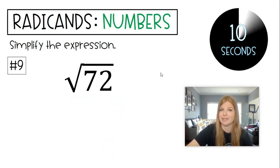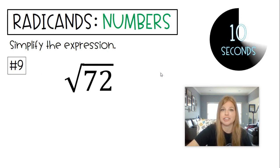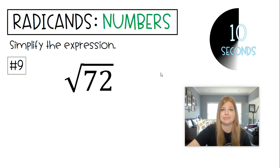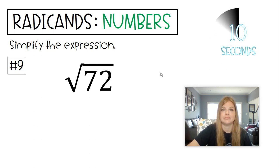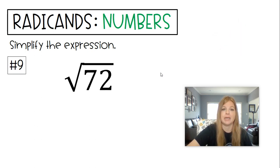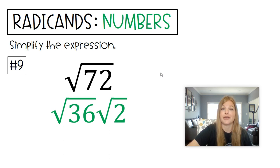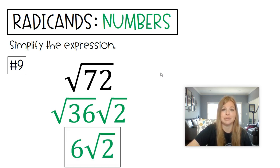Same idea with 72 — don't get tricked, don't do 9 and 8. It's 36. So that becomes Radical 36 times Radical 2, which is 6 Radical 2.